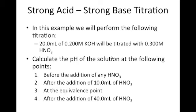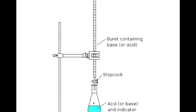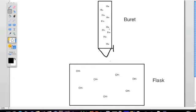Let's look at an example. We have 20 milliliters of potassium hydroxide at a concentration of 0.200 molar in our flask, and we're going to titrate that with different volumes of 0.300 molar nitric acid. The potassium hydroxide is in the flask and the nitric acid is in the burette.